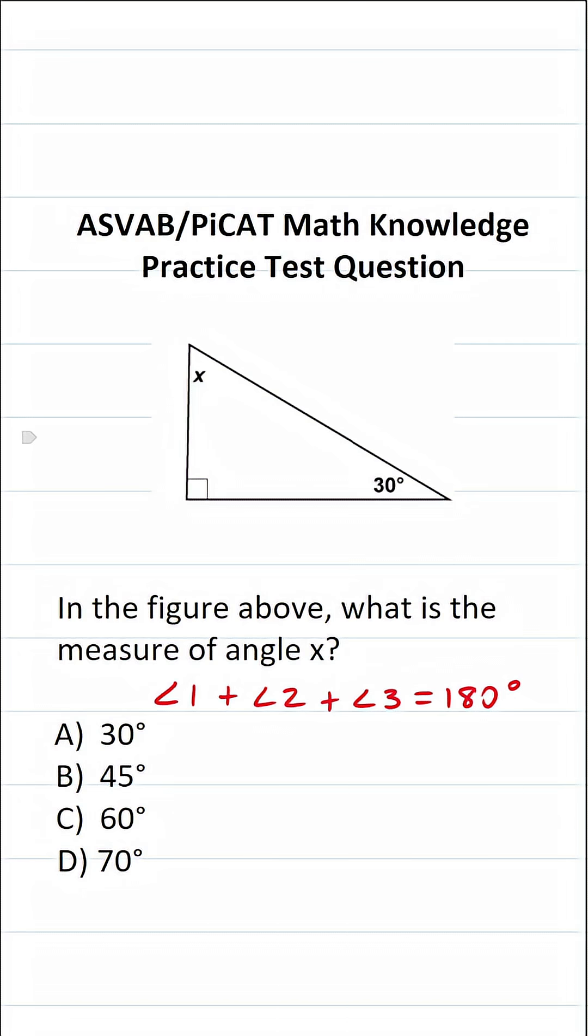What's more, we should notice that we have a right triangle here. So I know that this angle right here is 90 degrees. So I can say the measure of angle 1 is 90 degrees.